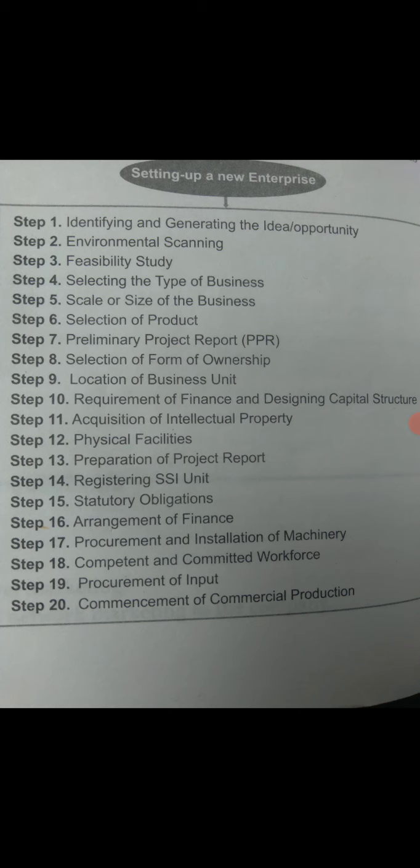The third step is feasibility study. Feasibility study determines the possibility of success of an idea — it tells whether the idea can be made a reality or not. Different aspects of feasibility study include market feasibility, technical or operational feasibility, financial feasibility, and organizational feasibility. In market feasibility, market research is conducted to know the size of the market, market potential, current and prospective demand, consumption pattern, competition, and consumer preferences.